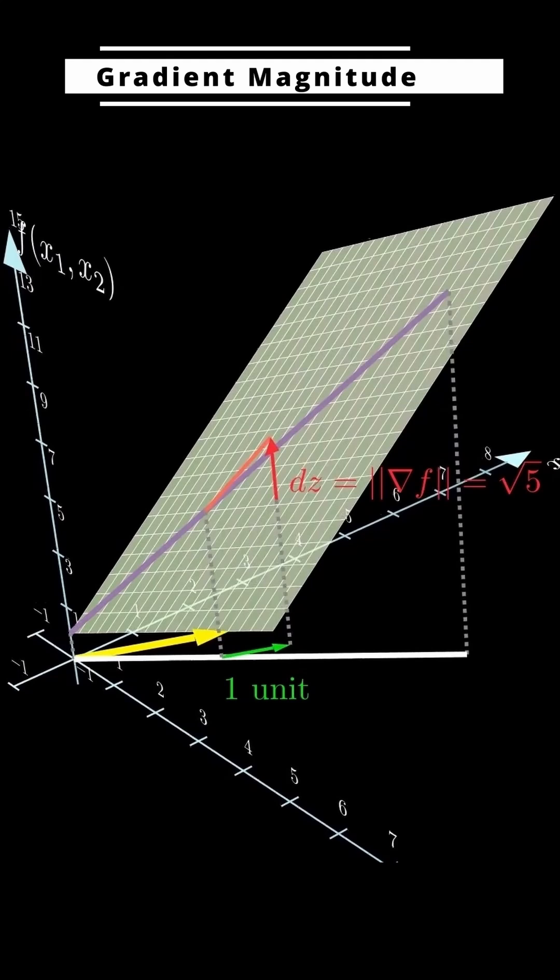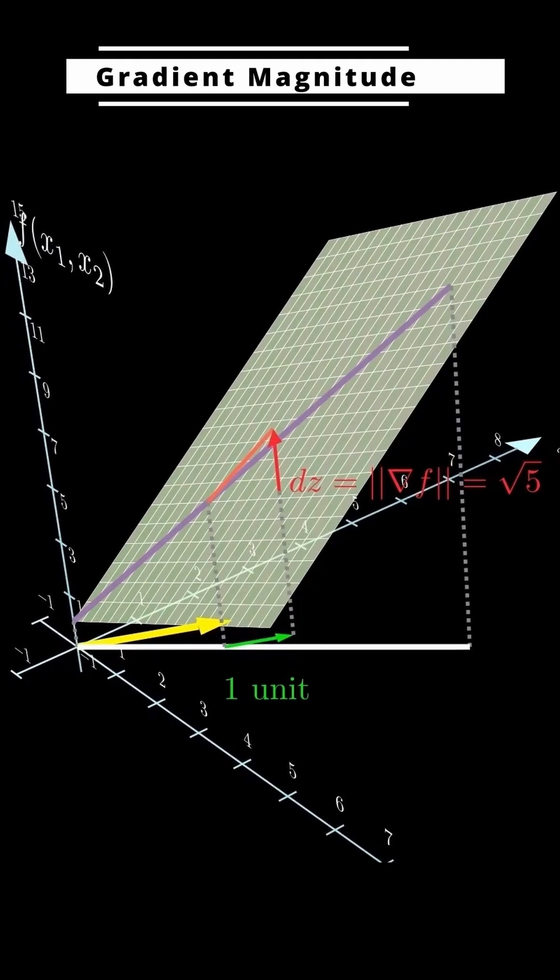In this example, the gradient's magnitude is the square root of 5. So that means if we move just one unit in the yellow gradient direction, the function value goes up by the square root of 5.